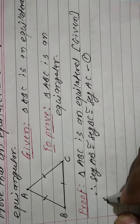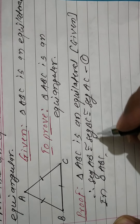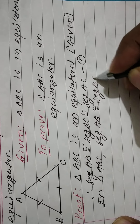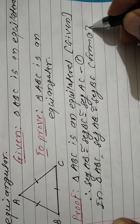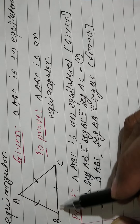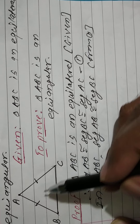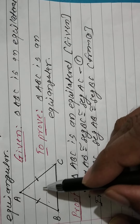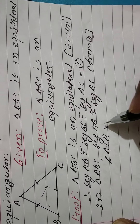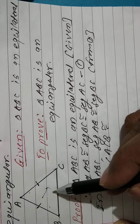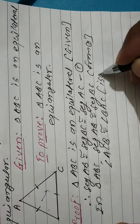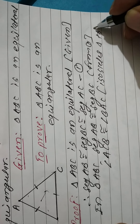In triangle ABC, segment AB is congruent to segment BC. Two sides are congruent. If two sides of a triangle are congruent, then the opposite angles are also congruent. AB's opposite angle is angle ACB, and BC's opposite angle is angle BAC. By the isosceles triangle theorem.